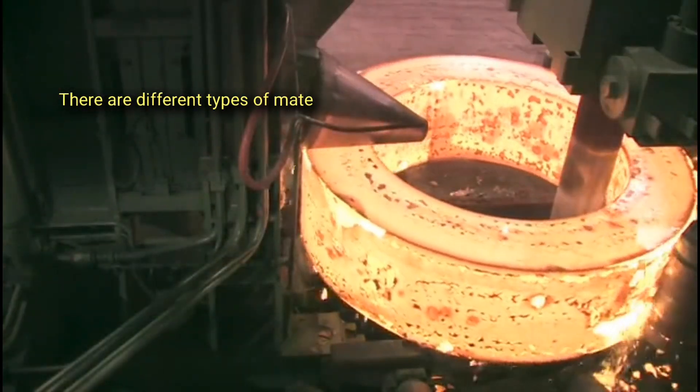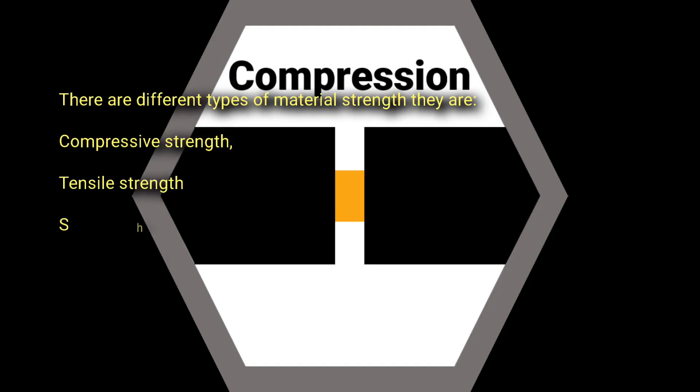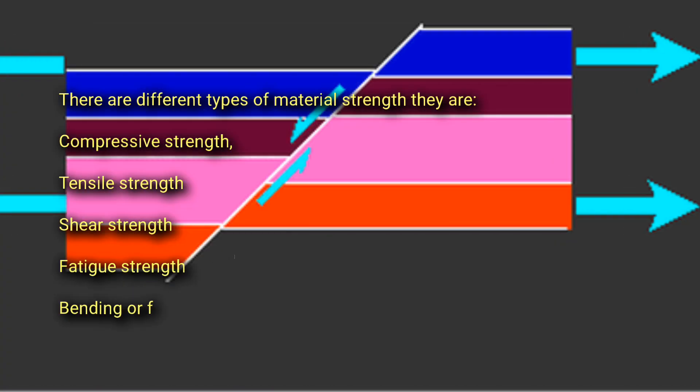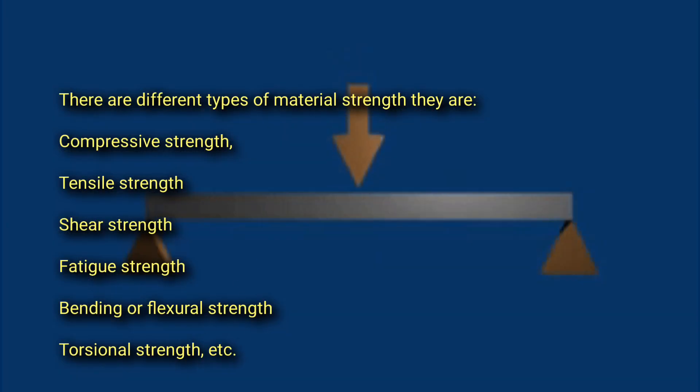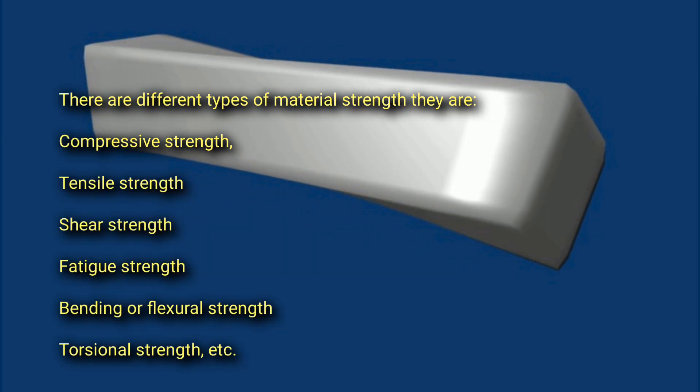There are different types of material strength. They are compressive strength, tensile strength, shear strength, fatigue strength, bending or flexural strength, torsional strength, etc.